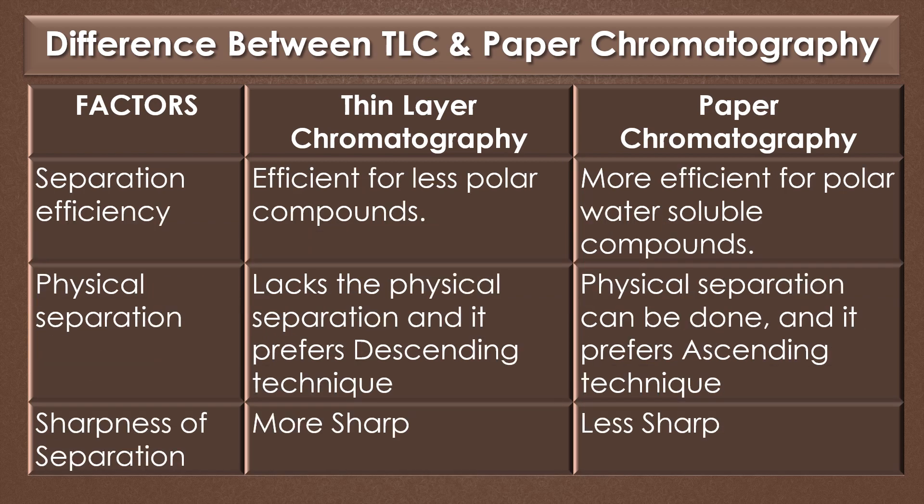Separation efficiency. Thin layer chromatography is efficient for less polar compounds, and paper chromatography is more efficient for polar and polar water-soluble compounds. Physical separation. TLC lacks physical separation and it prefers the descending technique, but in paper chromatography, physical separation can be done and it prefers the ascending technique.